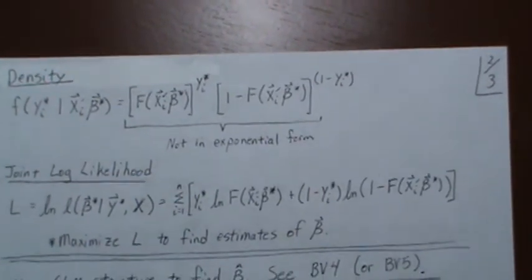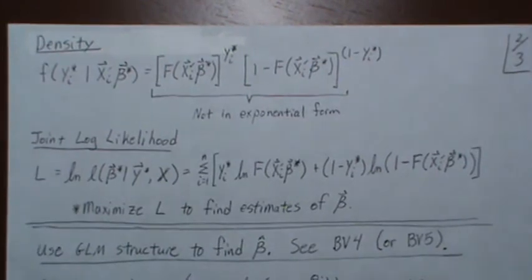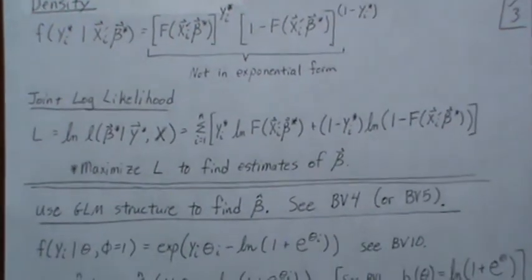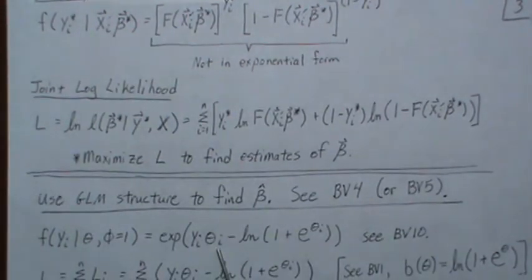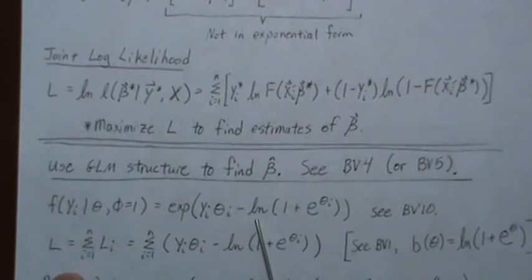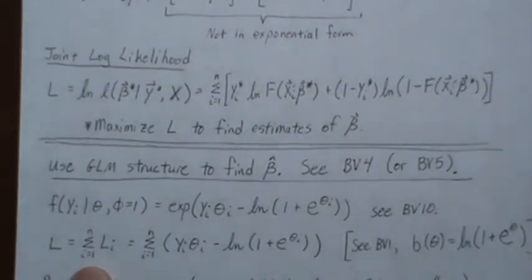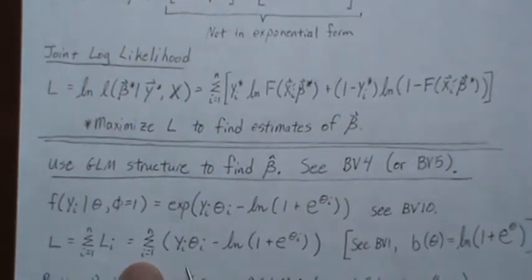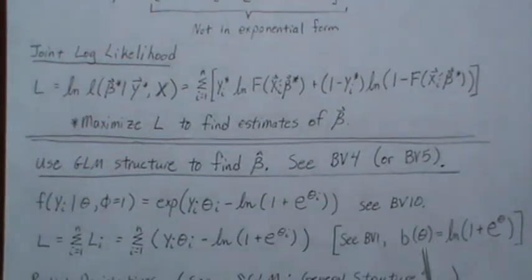But we're going to stop there and just jump right into the GLM structure. I have a video called generalized linear models, general link function, that we're going to try to follow exactly, just to show you that that video is indeed what is used in R and other software packages. So here's the density of a Bernoulli random variable in canonical form, see BV10 for that. Then this is the likelihood. If this is a density, we switch those around and it becomes a likelihood, but it's essentially the same thing. We sum over our sample n and we get this.